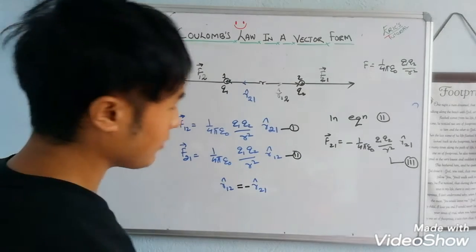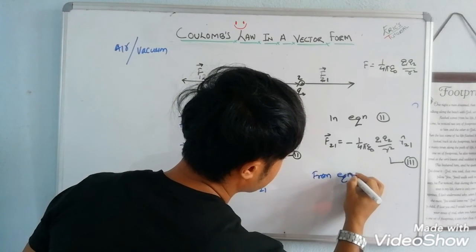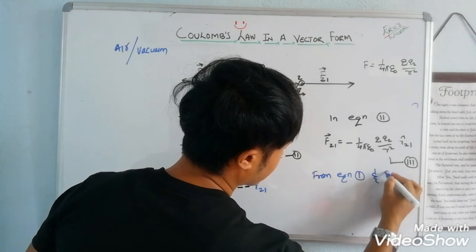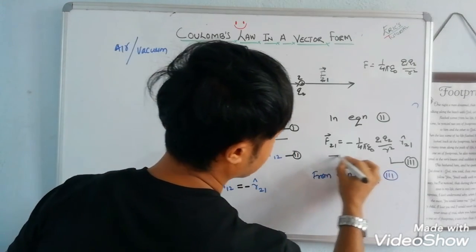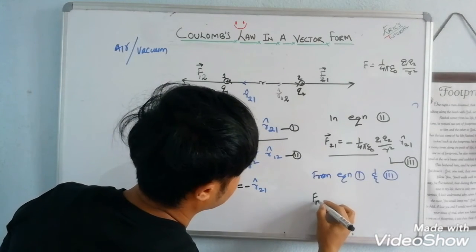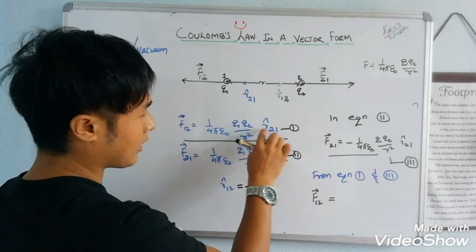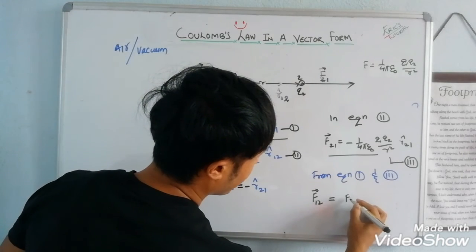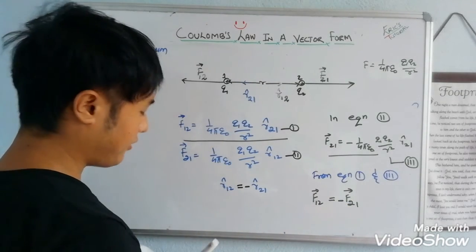Through from equation 1 and equation 3, when you see this equation and this equation, finally, F1,2 vector is equals to 1 by 4πε₀, q1 q2 by r square, R cap 2,1. It is the same thing. So F2,1 vector is in opposite direction. Got it, everyone?